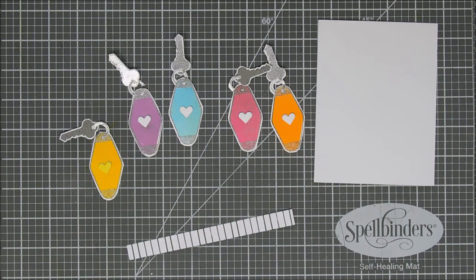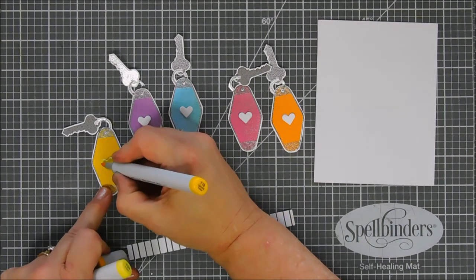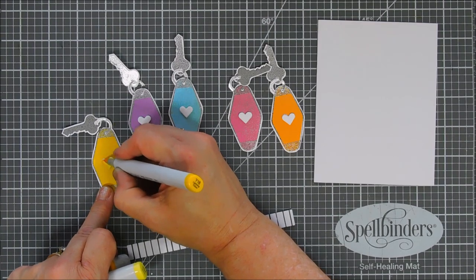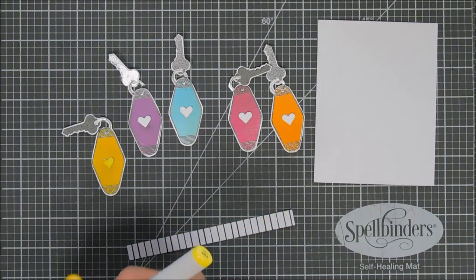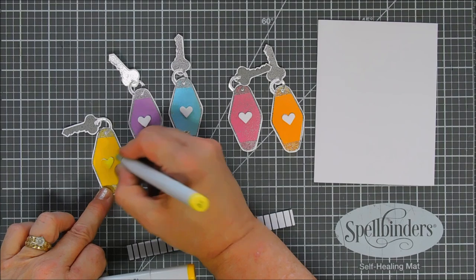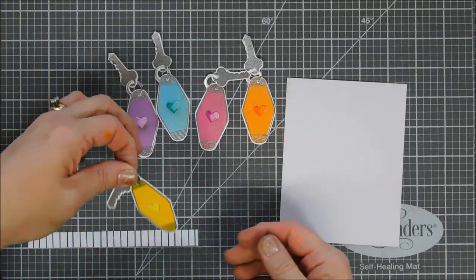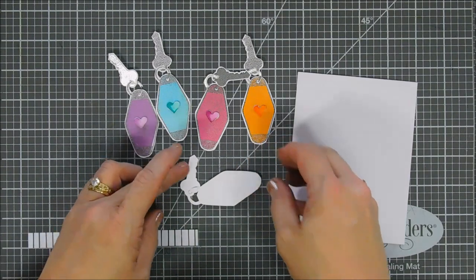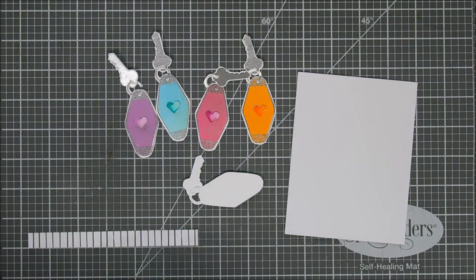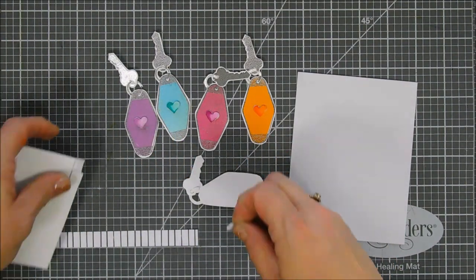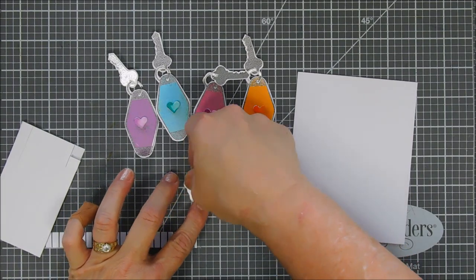I did decide to use coordinating copic markers just two different shades of the same color to highlight the hearts just so they didn't really stand out as much but they were there. I'm going to do that to all of them and once they're done we're going to flip them over and add foam adhesive behind our keychains which are so fun.